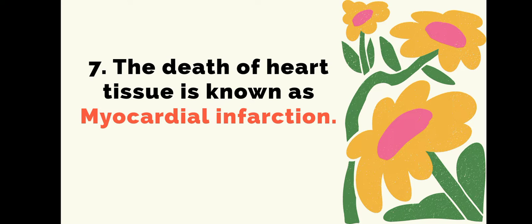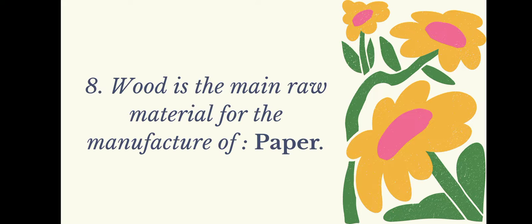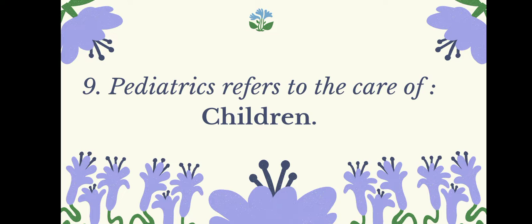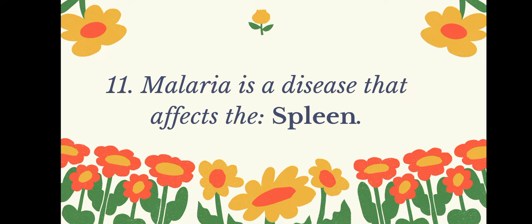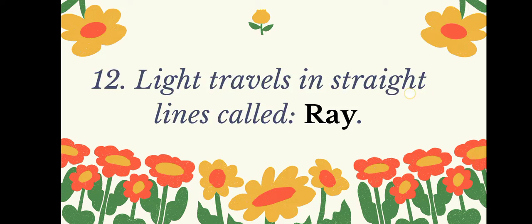The death of heart tissue is known as myocardial infarction. Wood is the main raw material for the manufacture of paper. Pediatrics refers to the care of children. Jaundice affects the liver. Malaria is a disease that affects the spleen.